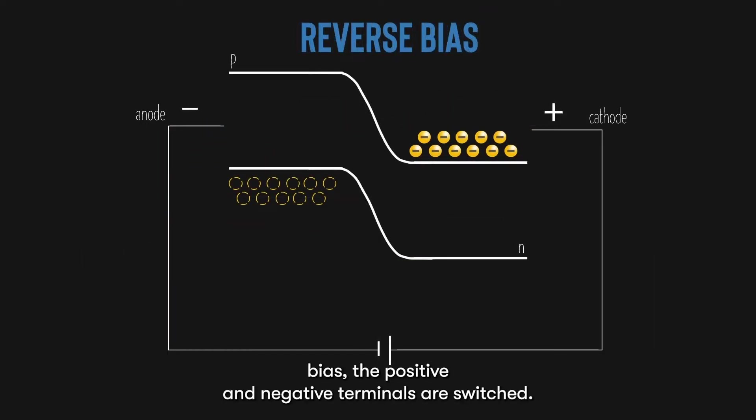In reverse bias, the positive and negative terminals are switched. The negative side, now attached to the P side, attracts the holes. The positive side, now attached to the N side, attracts the electrons. This increases the electric field and energy barrier, causing the drift current to increase, overcoming the diffusion current, and making either side to have no minority carriers.